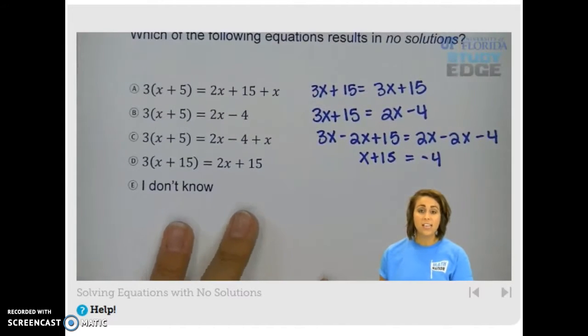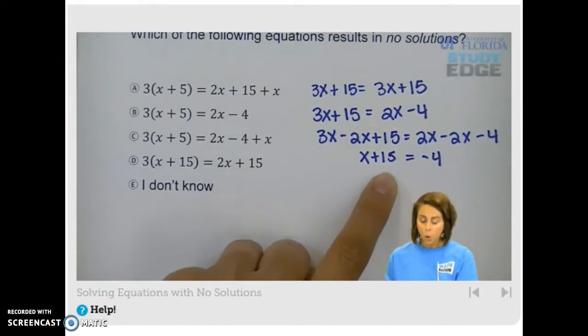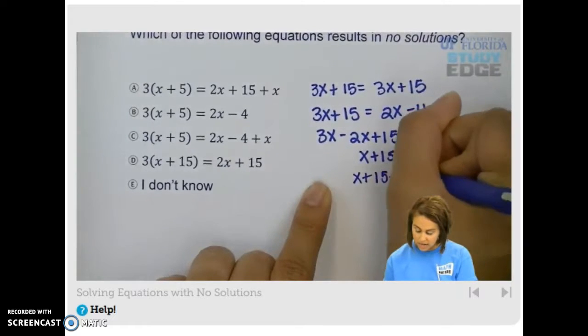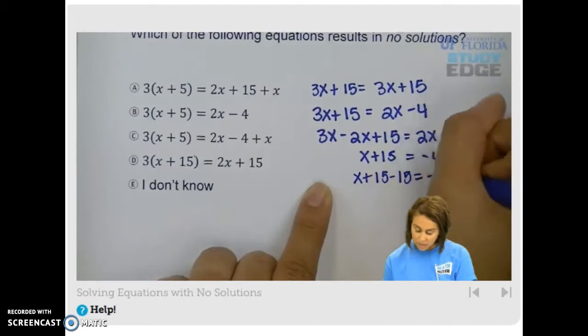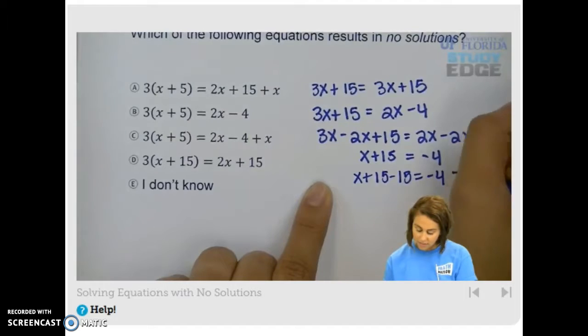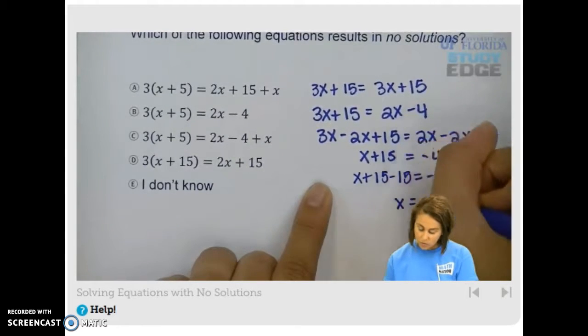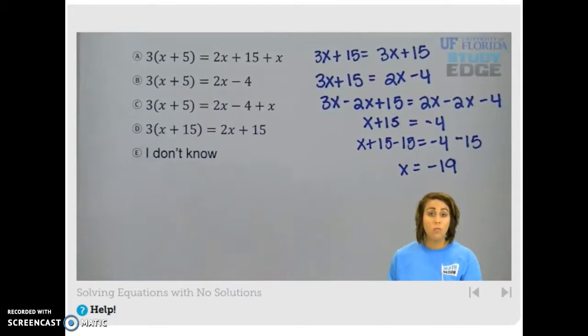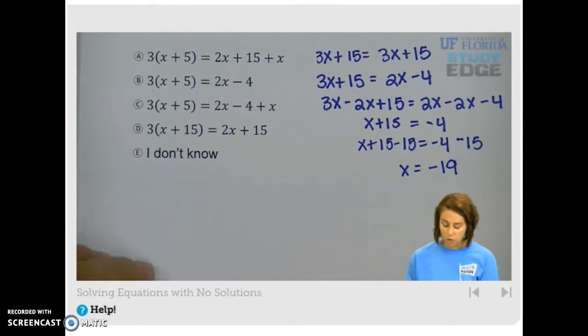So it's not looking like no solution here. What do you guys think? Well, we're going to have just 1 because when we subtract 15 from both sides, we're going to get x by itself on the left, and on the right we're going to get negative 19. So we have one solution there. We're looking for an equation with no solutions, so let's keep going.